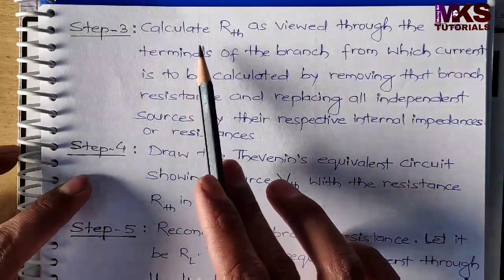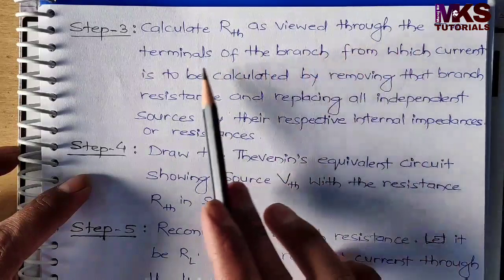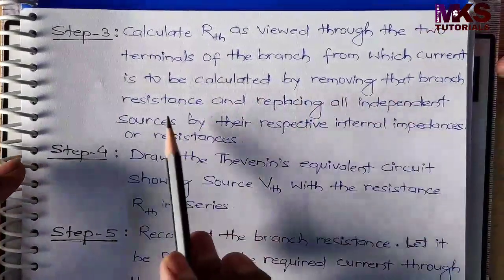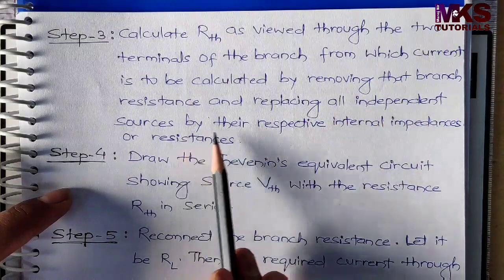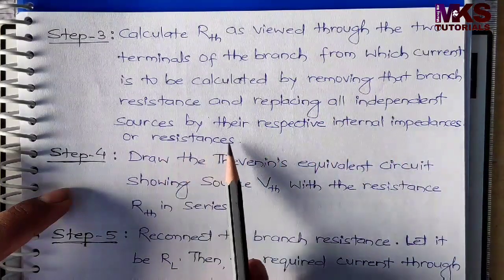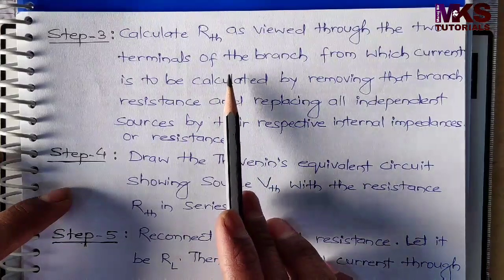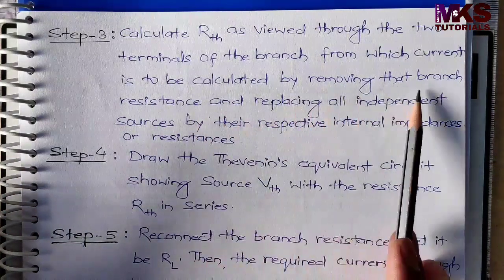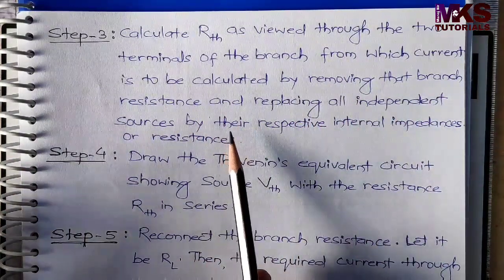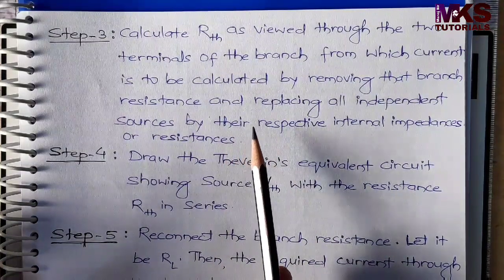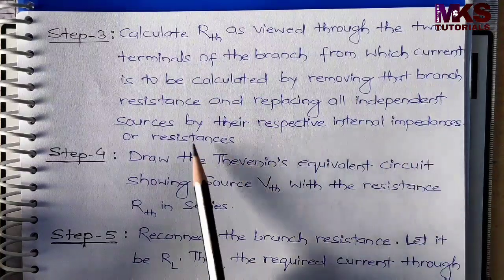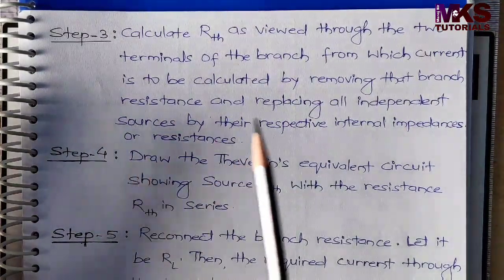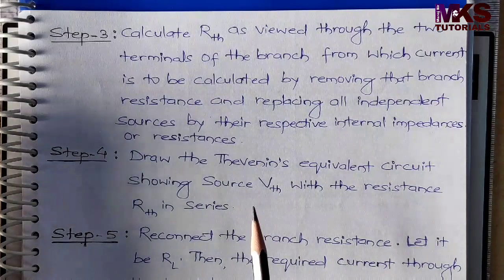Step 3 — Calculate RTH through the two terminals of the branch from which current is to be calculated, by removing that branch resistance and replacing all independent sources by their respective internal impedances or resistances. RTH निकालते समय जो branch के across current निकालना है उसको remove कर देंगे। अगर voltage source या current source के internal impedances दिए गए हैं तो उससे replace कर देंगे, अगर नहीं दिया है तो simply circuit में जितने भी resistance हैं उसी का measure करेंगे।